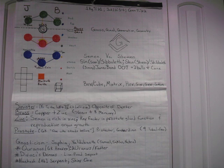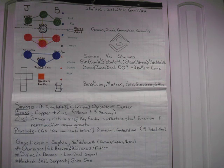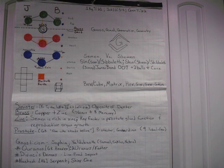There are three Bible verses for the passwords. You can go to First Kings chapter 7 verse 21 for Jachin and Boaz, Judges chapter 12 verses 5 through 6 for Shibboleth, and Genesis chapter 4 verse 22 for Tubal-Cain.